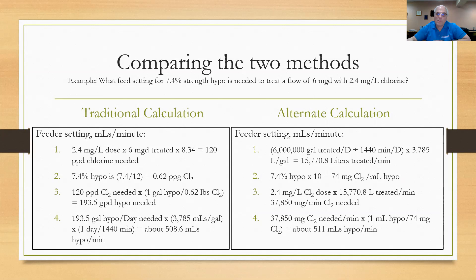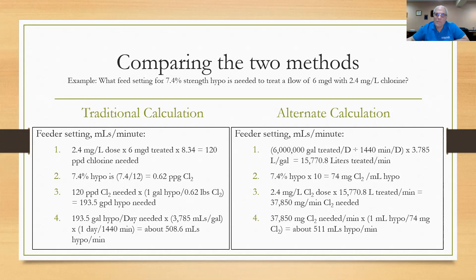On the right-hand side, here's the alternate method I'm suggesting — just as easy, maybe easier. Take 6 million gallons per day divided by 1,440 minutes per day to get gallons per minute, then multiply by 3.785. You're treating at 15,770.8 liters per minute. With 7.4% hypo multiplied by 10, that gives 74 milligrams of chlorine per milliliter of hypo. Then 2.4 mg/L times 15,770.8 L/min equals 37,850 milligrams per minute of chlorine needed. Divide 37,850 by 74 mg/mL, and you get 511 mL/min of hypo — which closely agrees with the 508 calculated on the left. That's just a different way of doing it.